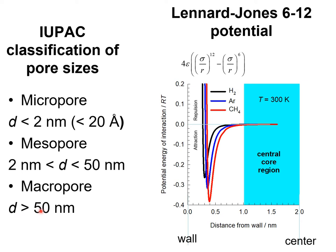Let us examine the energy of interaction of guest molecules with the pore wall. This graph presents calculations using the Lennard-Jones 6-12 potential. For hydrogen, the potential energy of interaction is shown by the black lines. For argon, the interaction energies are shown in blue, and for methane, the interaction energies are drawn in red.